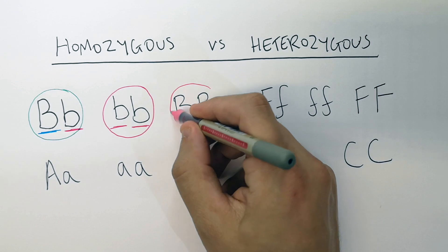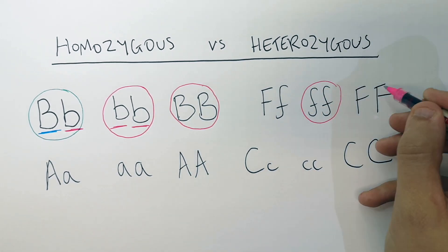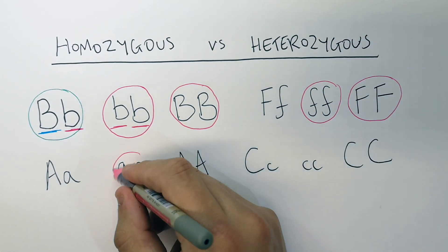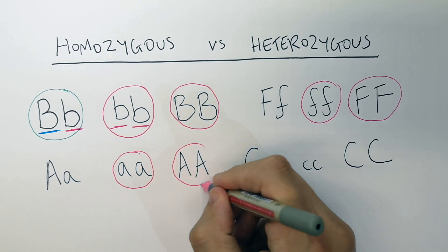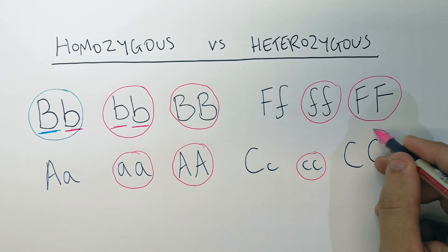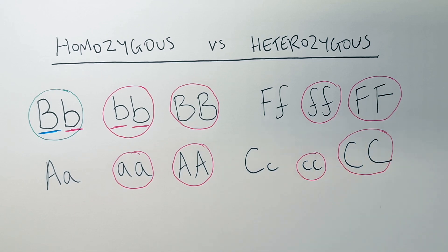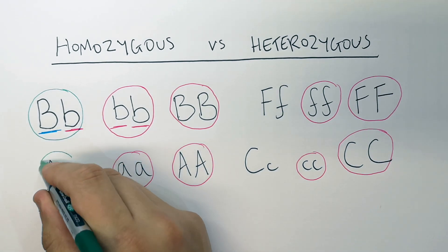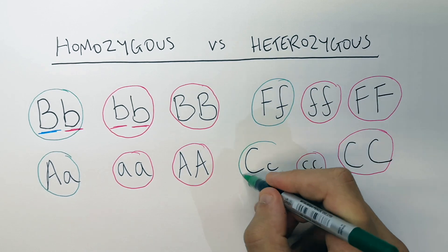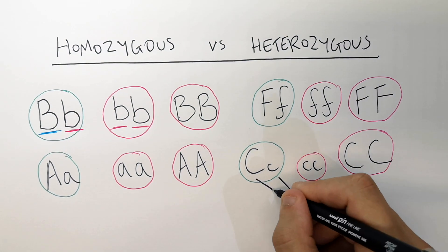So if they've got the same alleles, they are homozygous — for example big B big B, little F little F, big F big F, little A little A, big A big A, little C little C, big C big C — all homozygous. Whereas big A little A, little F big F, big C little C — different alleles — they are heterozygous.